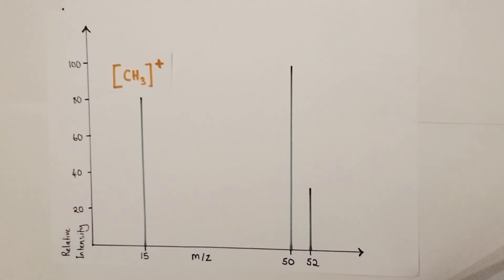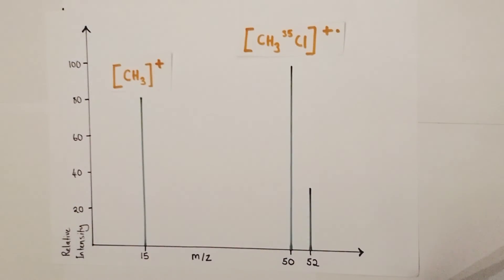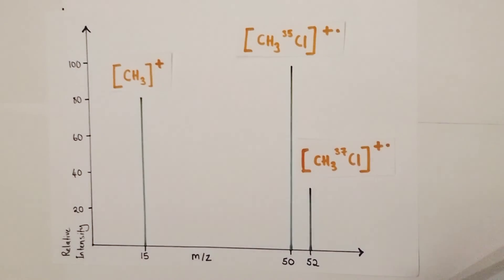So my two molecular ion peaks are chloromethane with chlorine-35 as part of the molecule - that's CH3 35Cl+ radical - and chloromethane but this one has the 37 isotope - that's CH3 37Cl+ and radical as well. And that has entirely interpreted and deduced what's going on in this particular mass spectrum for the molecule chloromethane.